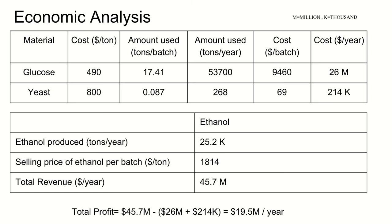Carrying on from the 25,200 tons per year example, an economic analysis was completed. Here you can see a table of the prices of yeast and glucose, the amount used in our three reactors, and the overall associated cost. You can also find the selling price of ethanol, the amount produced per year, and the associated revenue. This generated an overall profit of $19.5 million per year.